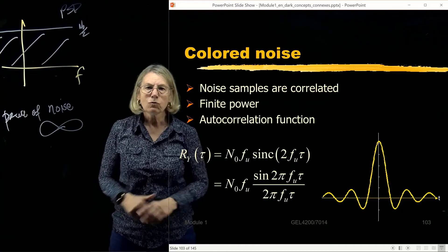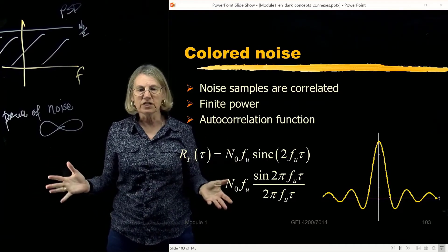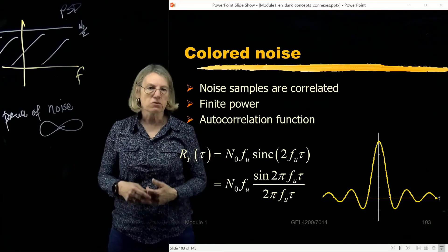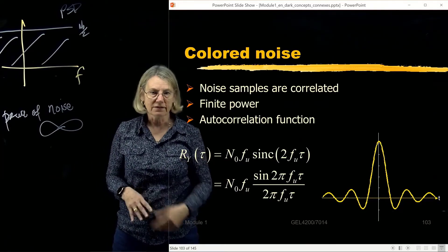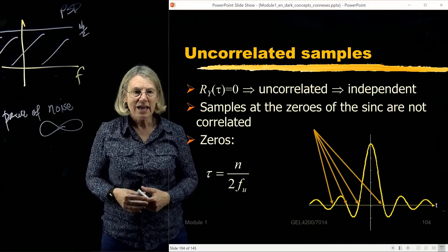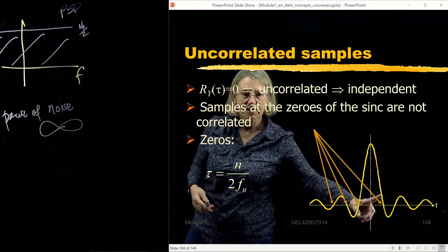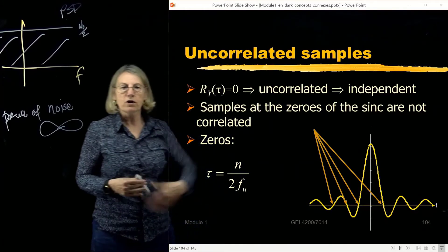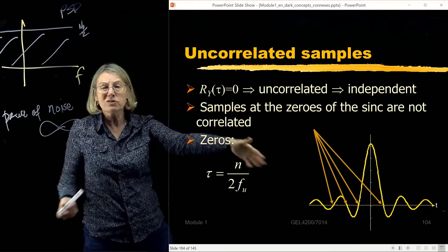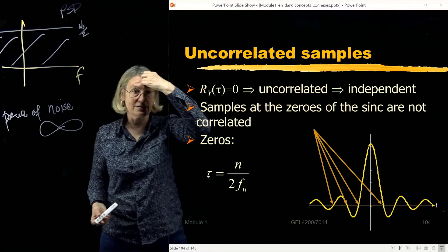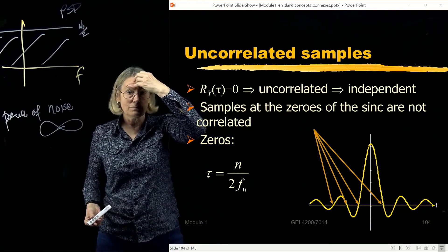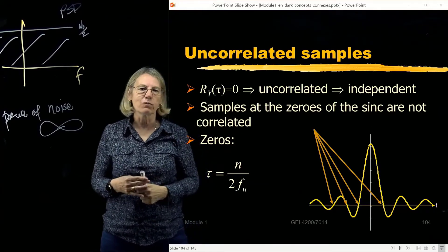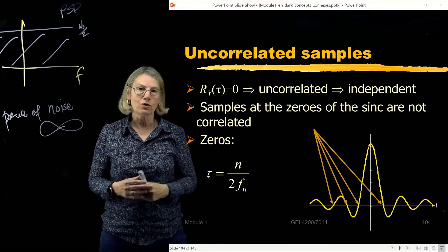When we do analysis, we'll still assume that the random variables are independent. This is reasonable because looking at the sinc function, there are points where the autocorrelation passes through zero, and at all of those points the samples are uncorrelated and independent — properties we'll continue to use in our analysis.